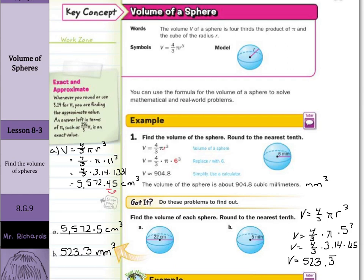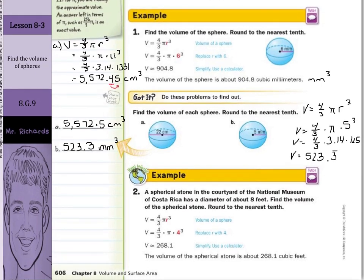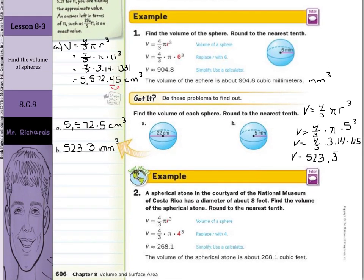In our second guided example, a spherical stone in the courtyard of the National Museum of Costa Rica has a diameter of about eight feet. Find the volume of the spherical stone, rounded to the nearest tenth. Make sure to note the diameter is 8, so the radius is 4. Solving gives the volume of 268.1 cubic feet.